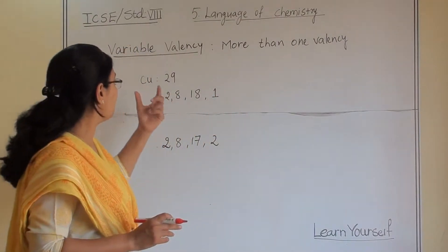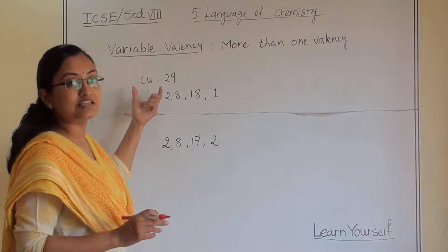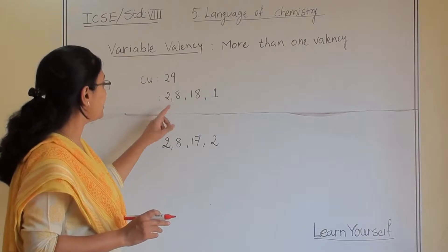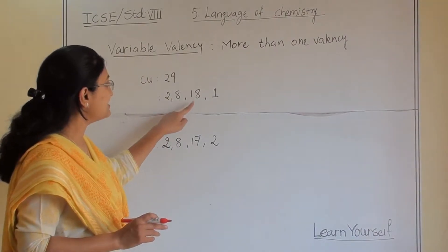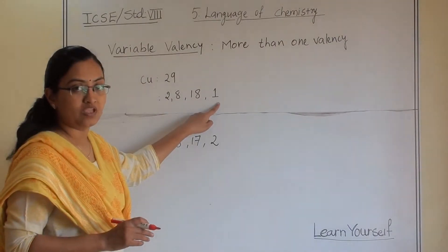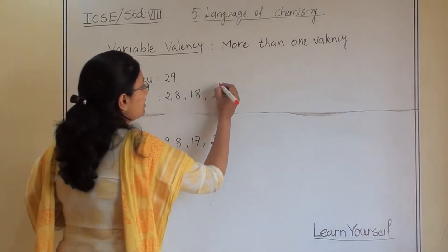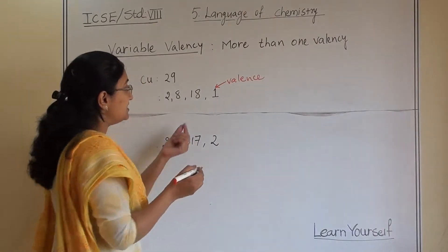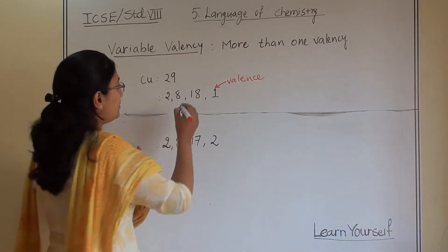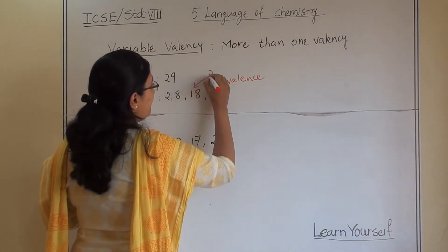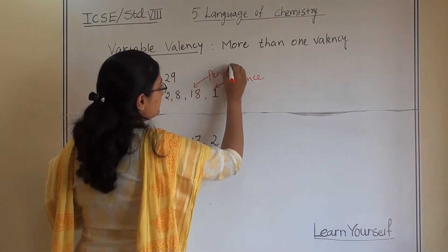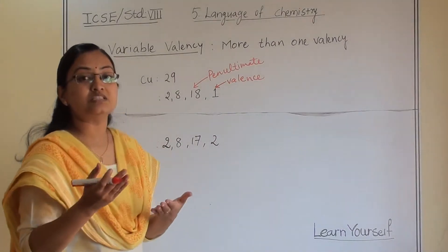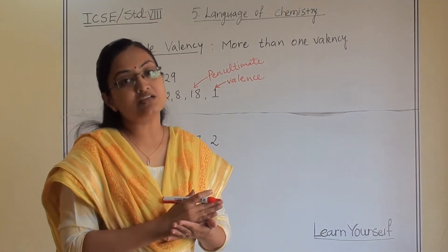For example, copper. Copper's atomic number is 29, so its electronic configuration will be 2, 8, 18, and 1. Now here, this is the valence shell. The second last shell we call the penultimate shell — penultimate means the second last orbit.